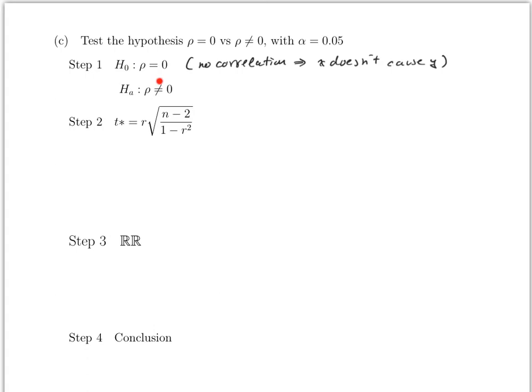For step two, the test statistic is t*. Since it uses a t-distribution, you use the t-table for the rejection region and p-value. From the previous work, r = −0.68 and n = 5. Plug into the formula.